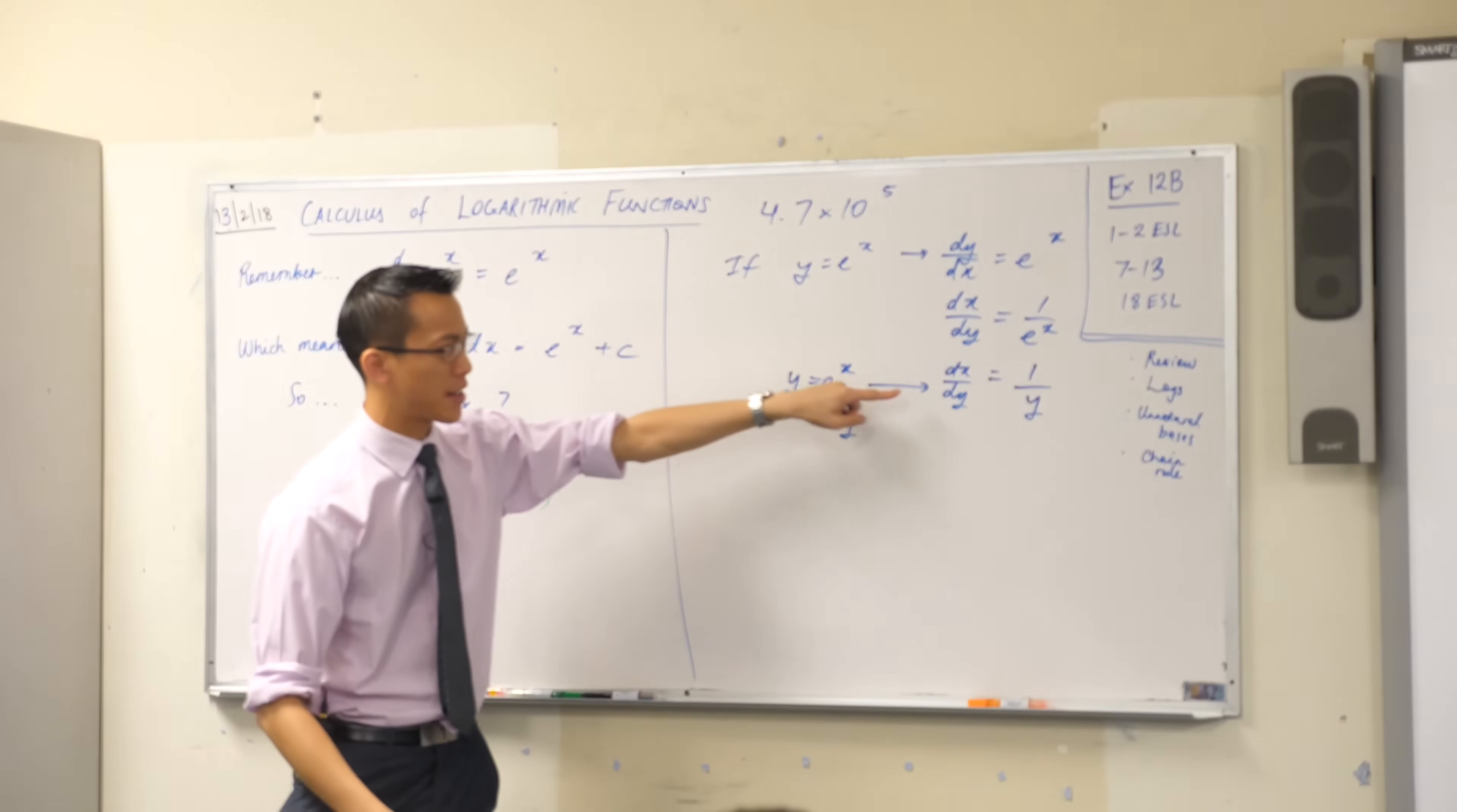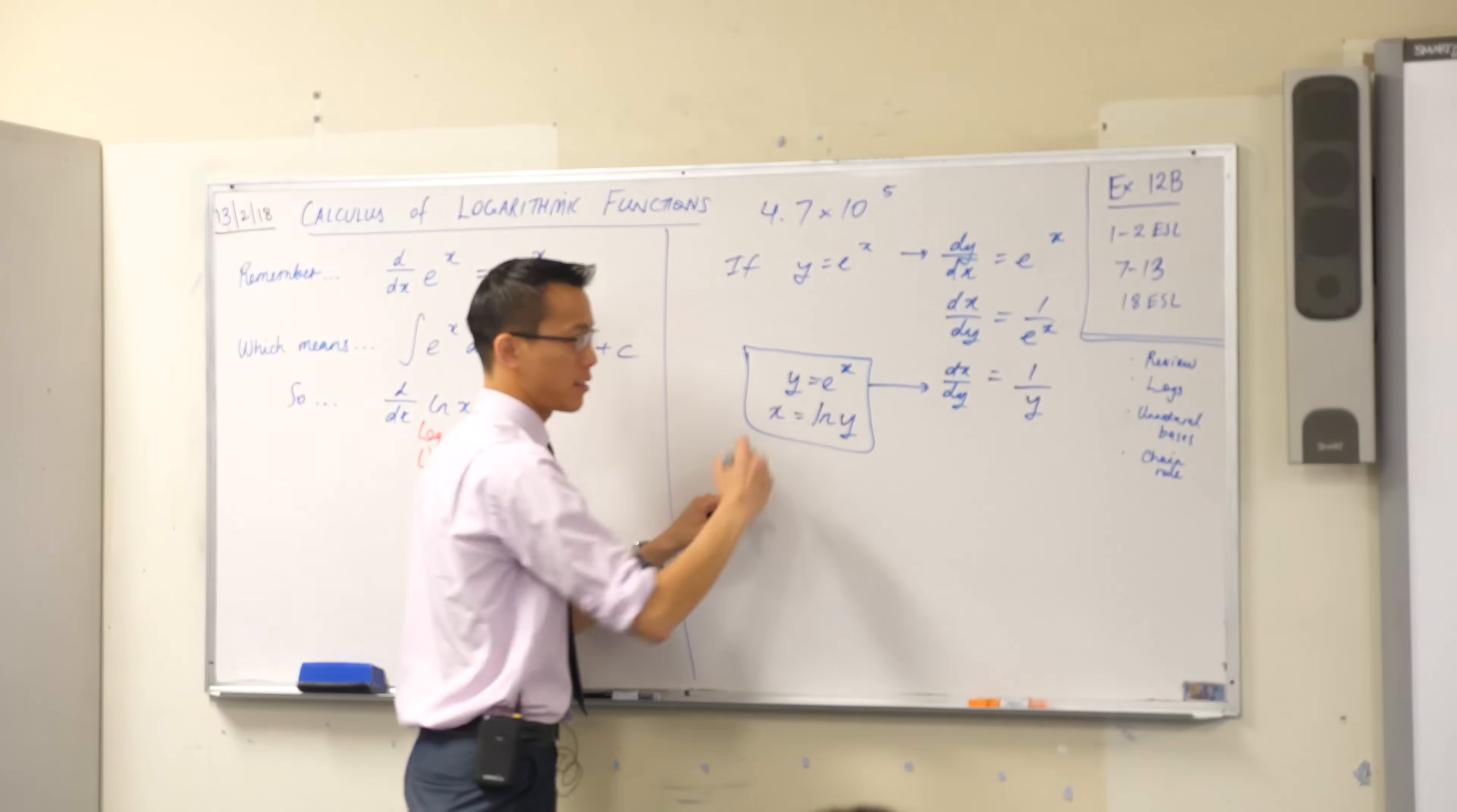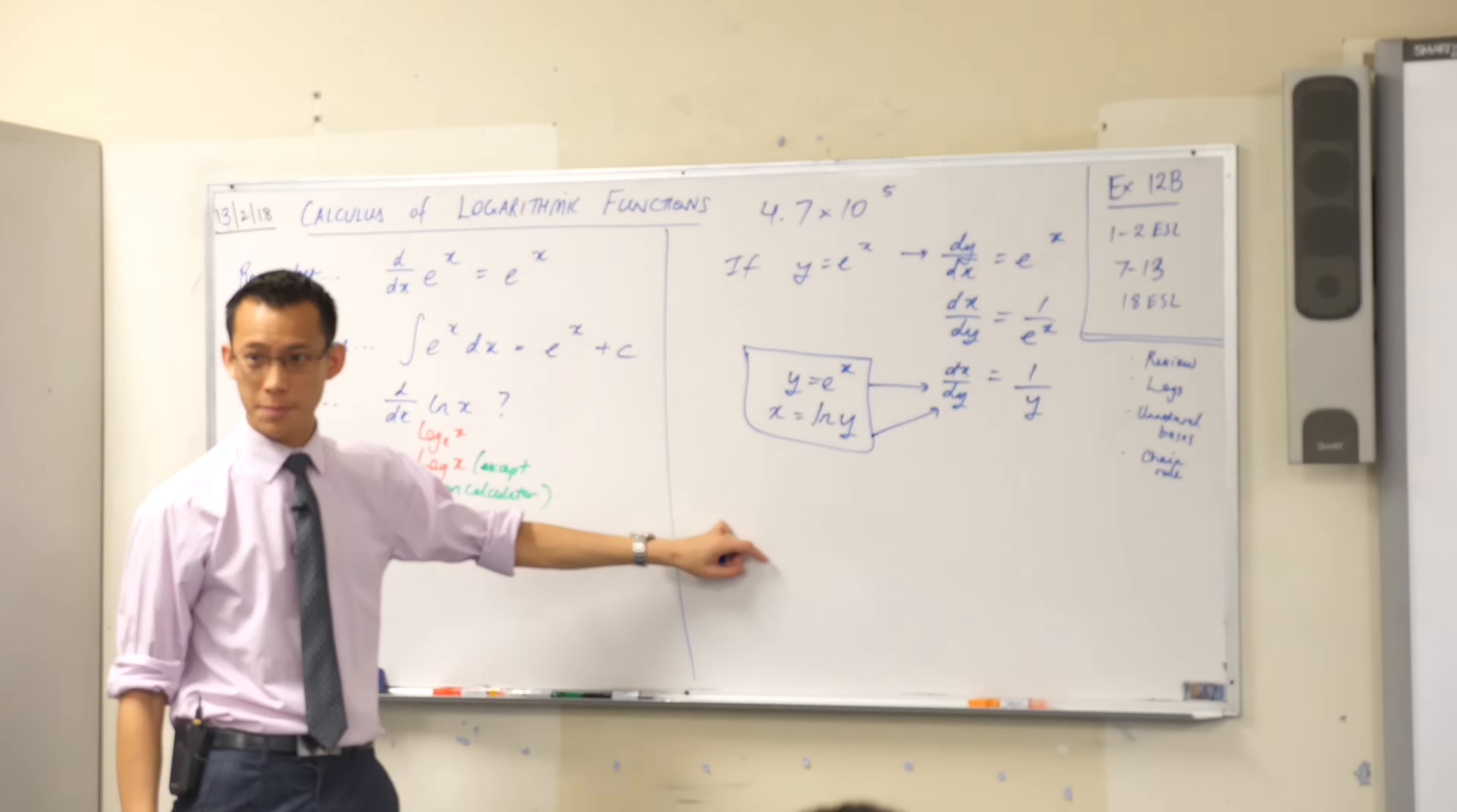So if y equals e to the x, this weird thing is what I get, but y equals e to the x and x equals log of y are the same thing. These are one object, right? So therefore the same derivative statement should be true for both. Is that okay?